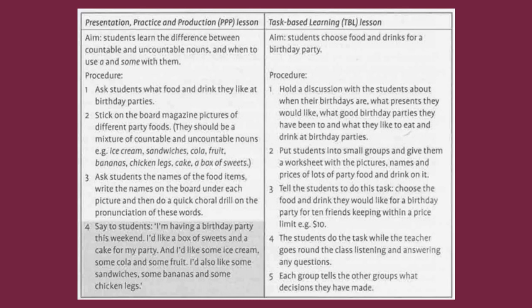3. Ask students the names of the food items, write the names on the board under each picture, and then do a quick choral drill on the pronunciation of these words. 4. Say to students: 'I'm having a birthday party this weekend. I'd like a box of sweets and a cake for my party. And I'd like some ice cream, some cola, some fruit, some sandwiches, some bananas, and some chicken legs.'